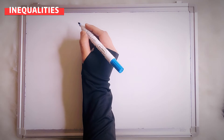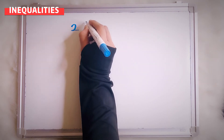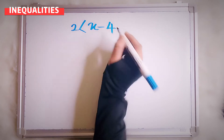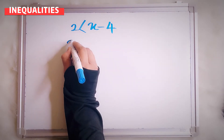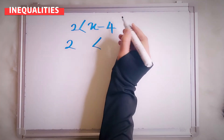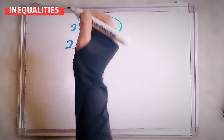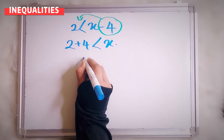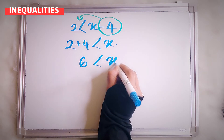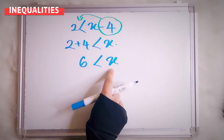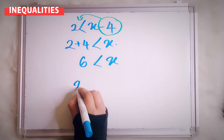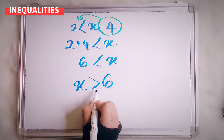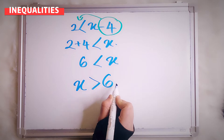Okay, so now we have 2 is less than x minus 4. I'll bring negative 4 to this side, so it will be plus 4, and here is x. So here is 6. Now I have to transfer x to this side. You see the sign here? Follow back like that. So now x is more than 6.